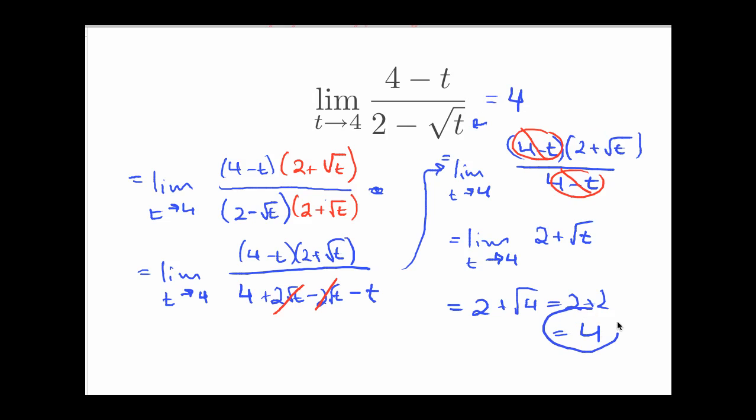All right, so how did I know to multiply by this? Well, the problem, as it was in the beginning here, was this square root thing here. So what I'm going to do is multiply by what we call its conjugate. This thing, 2 plus radical t, is what's called the conjugate of 2 minus radical t. That's the same expression, but it's with the sign changed here in the middle from minus to plus.